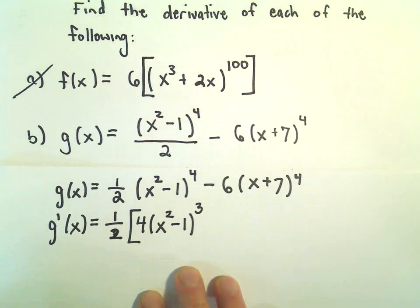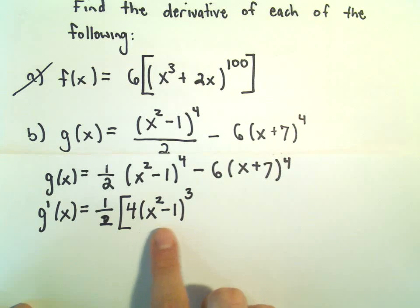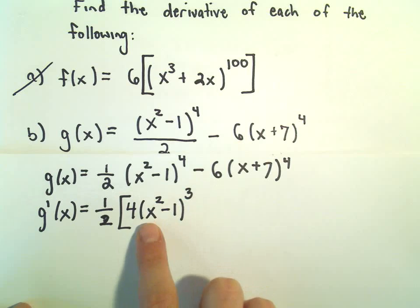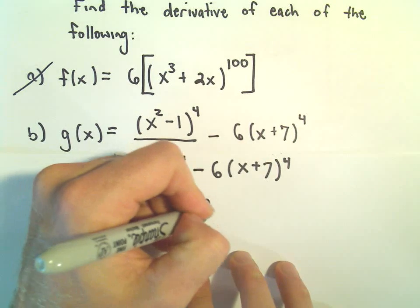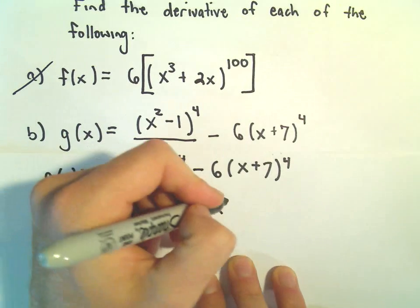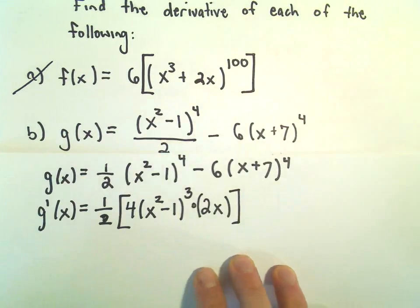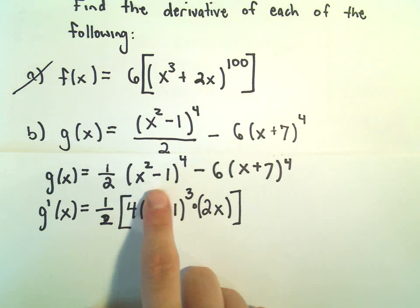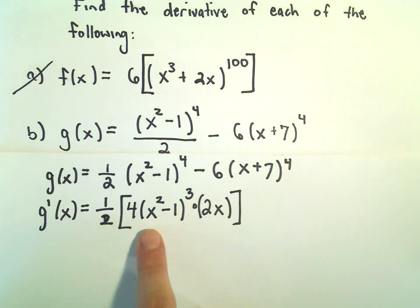We'll take 1 away from the exponent. And now we have to multiply by the derivative of the inside. So the derivative of the inside part, we have the exponent of 2. So x squared minus 1, when we take the derivative of x squared, we'll just get 2x to the 1st. And then the derivative of the minus 1 is just 0. So there's the derivative of the x squared minus 1 to the 4th. We'll get 4 times x squared minus 1 cubed times 2x.